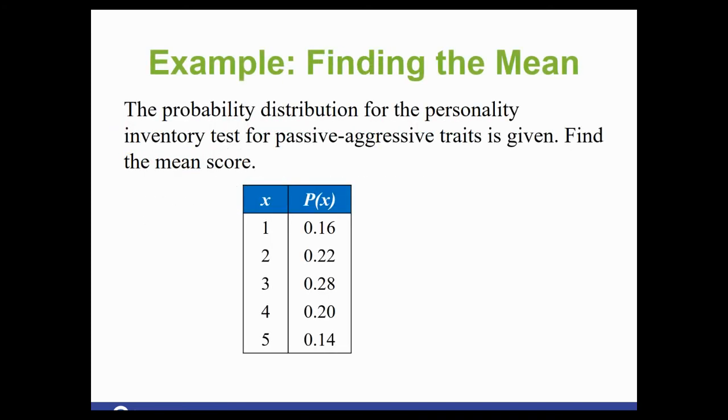So here's our first example. The probability distribution for the personality inventory test for passive aggressive traits is given. Find the mean score. So again, I'll jot that on here. It was sigma x times P(x).